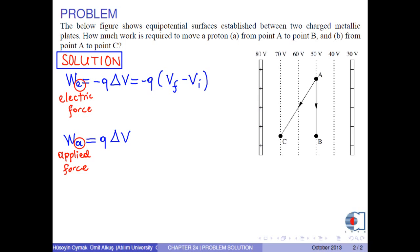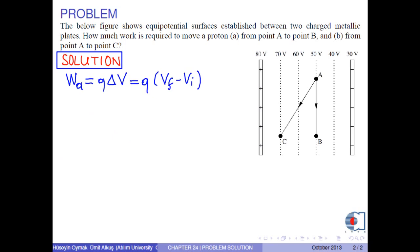In the problem, you are asked to find the work done by you. So we use the formula WA equals Q times delta V.